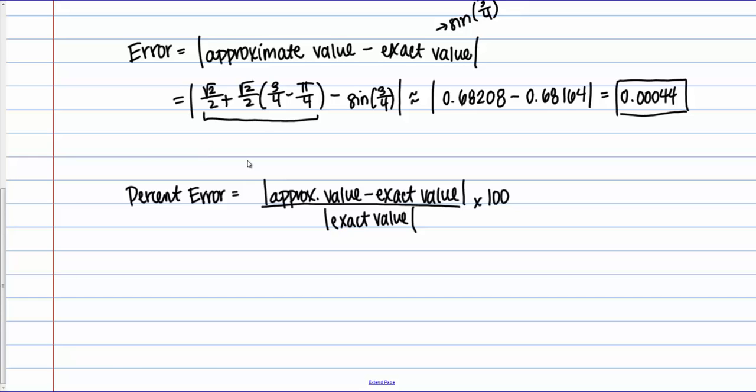So the formula for percent error is given here. It's the absolute value of the approximate value minus the exact value. Divided by the absolute value of the exact value. And then we multiply that by 100 to get a percent. So let's apply this by continuing with the same example we were working with previously. And we'll find the percent error of our approximation to the sine of three-fourths.